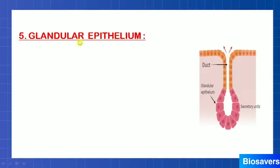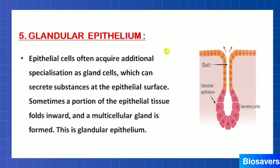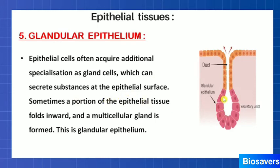The last type of epithelial tissue is glandular epithelium. In glandular epithelium, there are gland cells present. These cells are secretory in nature, so this epithelium is present in organs where secretion is necessary — for example, in our digestive tract.